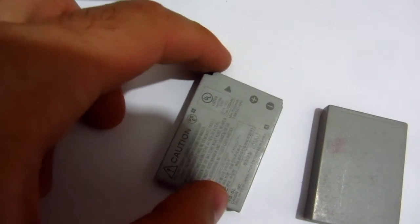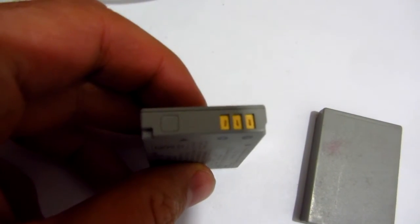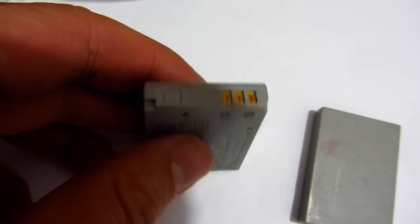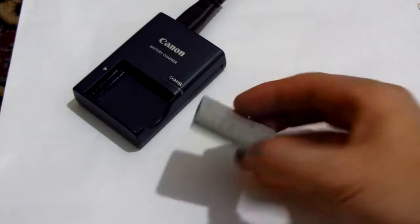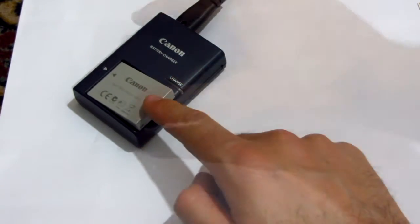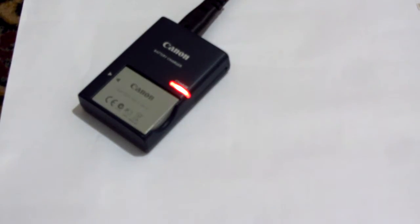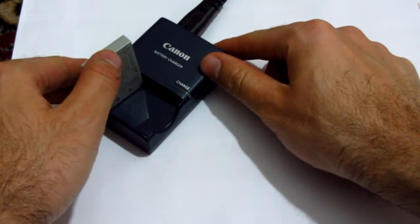Hi there, this is the battery from a compact camera Canon SX 220. It's a lithium-ion battery. Let's connect it to the charger. While it's being charged, the red LED is shining. Let's take out the battery and notice